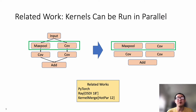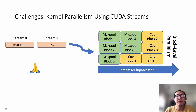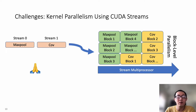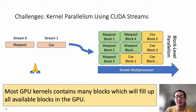Meanwhile, researchers also try to train models in parallel based on their topology orders. For example, in this figure, the MaxPool kernel and Conv kernel can be run in parallel because they don't need the output from each other. Most deep learning frameworks use CUDA streams to launch kernels in parallel. Unfortunately, kernel parallelism using CUDA streams is not controlled by developers and only achieves block-level parallelism. Since most GPU kernels usually contain many blocks, which will fill up all available blocks in the GPU, this prevents blocks from other kernels from starting. As a result, kernels are still executed sequentially.